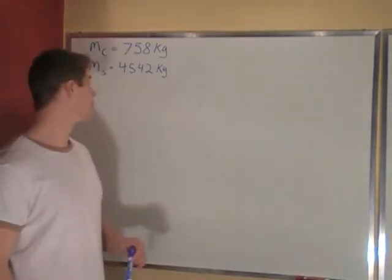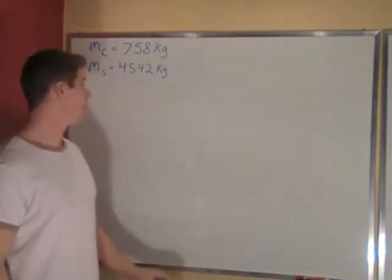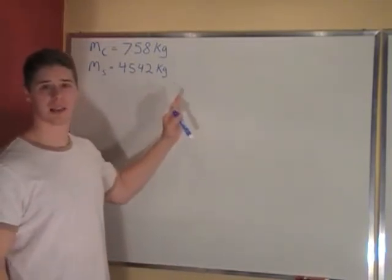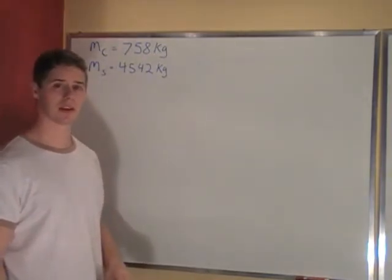In this problem we have a car that rear ends a semi. The masses of the car and semi are shown here. The car hits the semi and they travel together. They get stuck and travel together. So we can use conservation of momentum in this case.